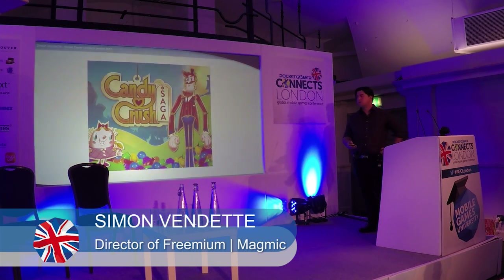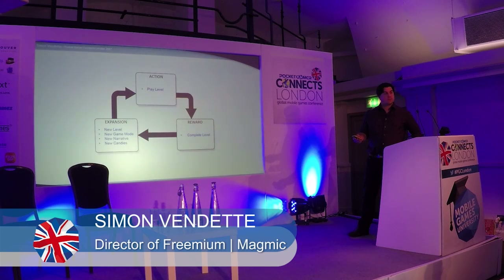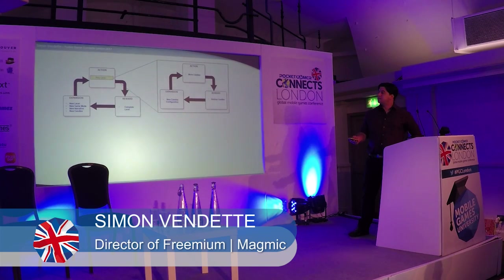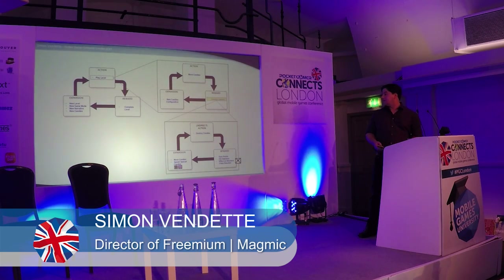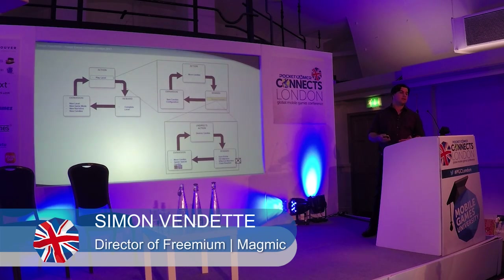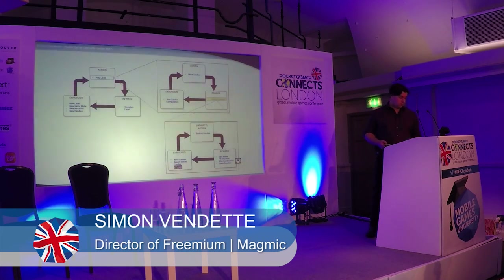Let's take Candy Crush Saga as an example and deconstruct it using compulsion loops. The action is to play the level; the reward is to complete the level; the expansion is new levels, new game modes, new narrative, and new candies. But playing the level is itself an action: to play the level you move candies, the reward is destroying the candies, and the expansion is new configurations that make you want to move more candies. As you destroy candies you earn points, fill objectives, affect blockers like the licorice cage, and trigger chain reactions. The expansion there is that candies fall and special candies spawn. This is basically the core loop of Candy Crush, and you can go further by deconstructing each sub-loop into further sub-loops.